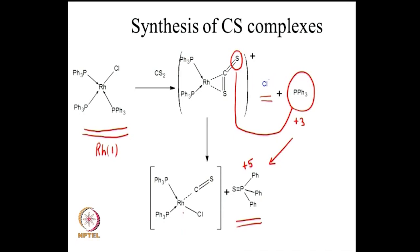The rhodium(I) CS complex formed has CS bonded in a linear fashion, just like carbon monoxide, and the CS molecule is quite stable in the coordination sphere of rhodium. It would not have been possible to isolate carbon monosulphide as a neutral molecule except in a very cold matrix. The metal is in fact stabilizing this otherwise unstable molecule, carbon monosulphide, within its coordination sphere.